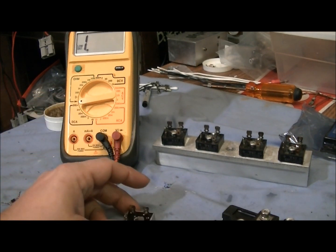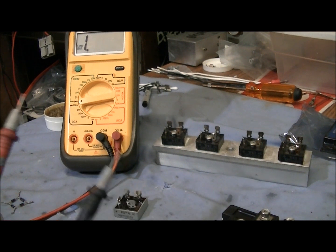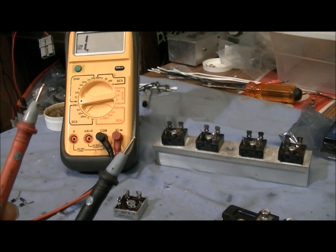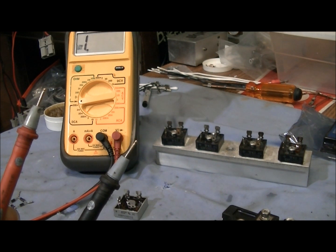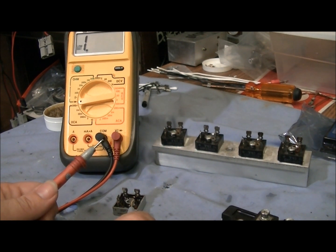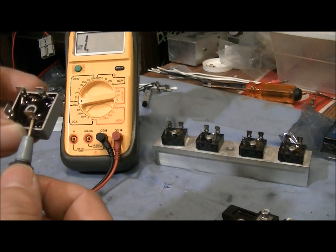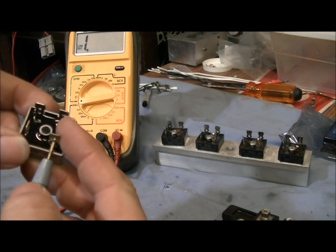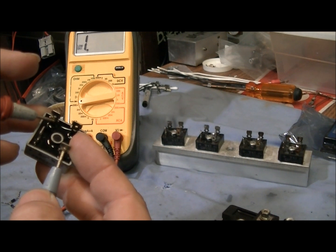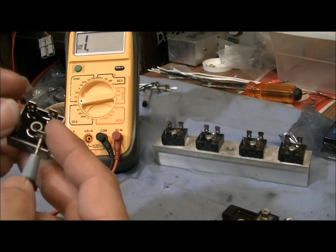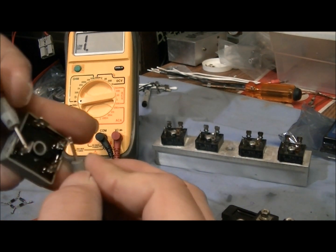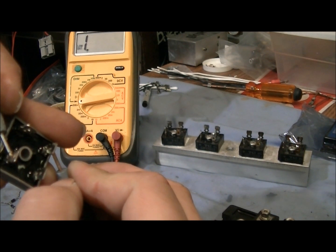First off we want to check to make sure we get no reading from AC to AC. This can also be checked with a continuity meter as well. So I'm going to stick, it doesn't matter which lead, on one of the ACs. Just take the other one on the other AC. As you notice I'm getting no reading at all. You can flip them around if you'd like. No reading at all. So far so good. That's a good indication.